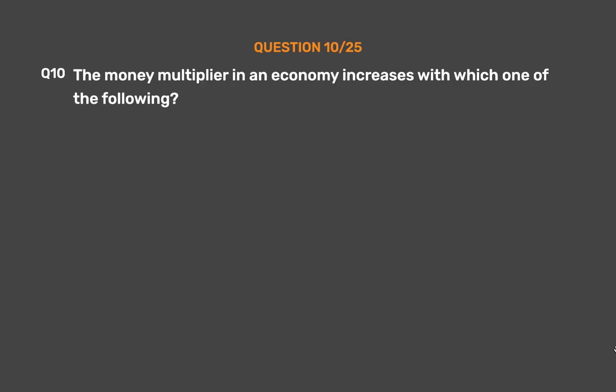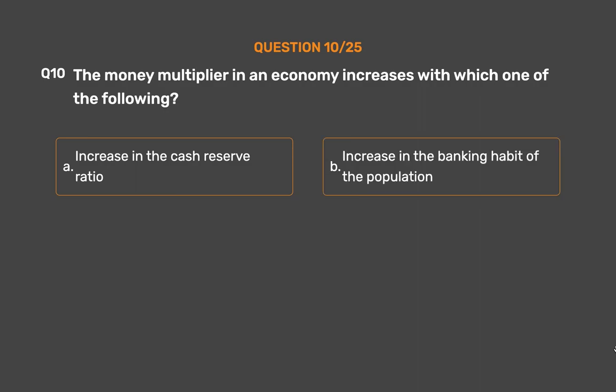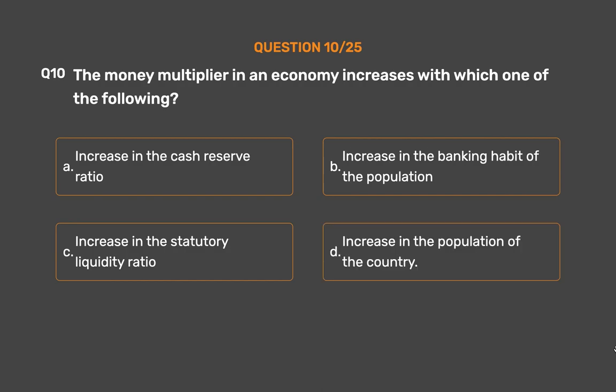Question No. 10: The money multiplier in an economy increases with which one of the following? Option A: Increase in the Cash Reserve Ratio. Option B: Increase in the Banking Habit of the Population. Option C: Increase in the Statutory Liquidity Ratio. Option D: Increase in the Population of the Country.